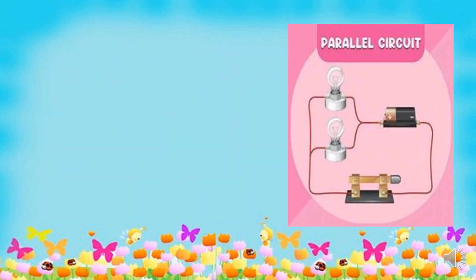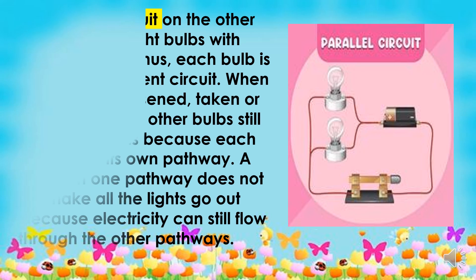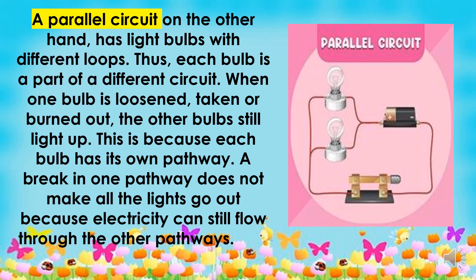Another type is the parallel circuit. A parallel circuit has light bulbs with different loops. Thus, each bulb is a part of a different circuit. When one bulb is loosened, taken, or burned out, the other bulbs still light up. This is because each bulb has its own pathway. A break in one pathway does not make all the lights go out because electricity can still flow through the other pathways.